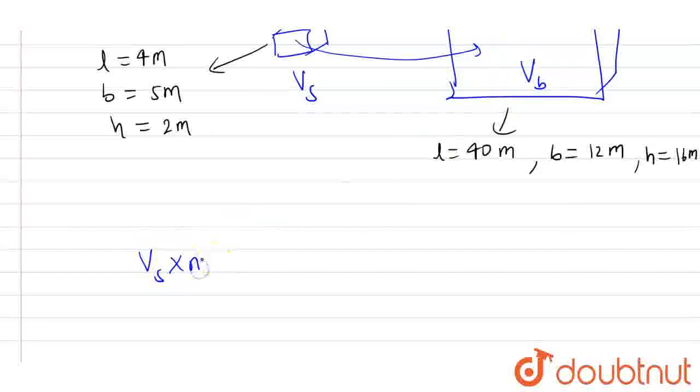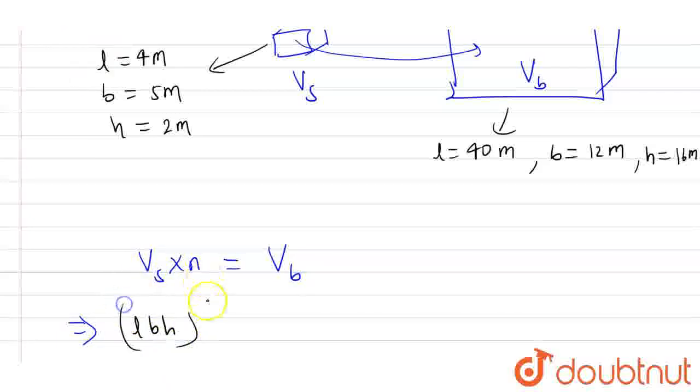Okay? So Vs into N number of, N number of Vs, volume which is small, it can add N number of Vs. This is the volume concept. Okay? So here is Vs. What is it? What is it? LBH into N.